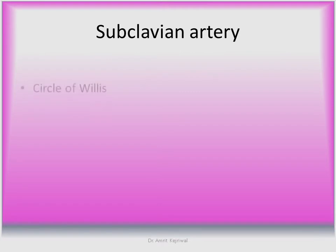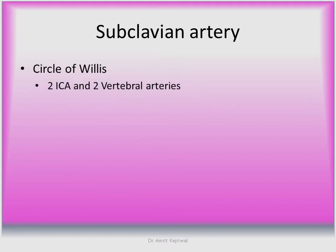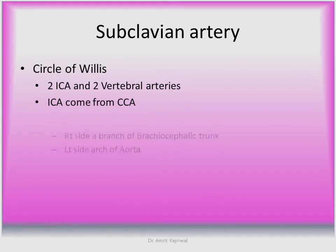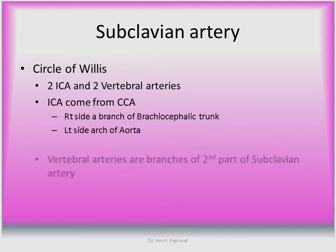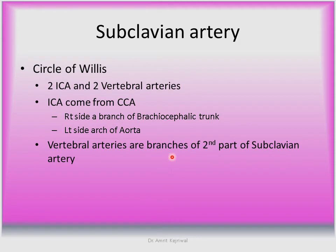Now coming to the anatomy. The Circle of Willis is formed by two internal carotid arteries and two vertebral arteries. The internal carotid artery is a branch of the common carotid artery. The right common carotid artery is a branch of the brachiocephalic trunk, and the left side is a branch of the aorta. Vertebral arteries are branches of the second part of the subclavian arteries.